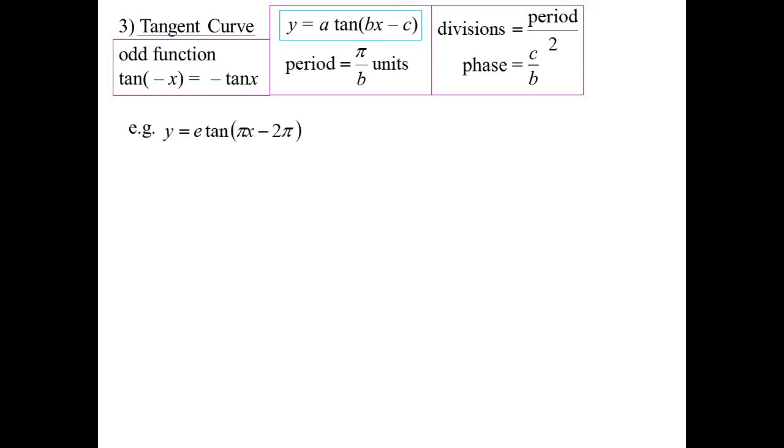Y equals e tan π x minus 2π. So the period is just 1. So I'll mark off every half of my axis. Amplitude, well, we don't worry about amplitude with a tan curve. So, really, throwing that e out the front means nothing. Because I'm not going to have a scale on my y axis. Again, that only becomes important if there's something else I was going to draw on it as well.